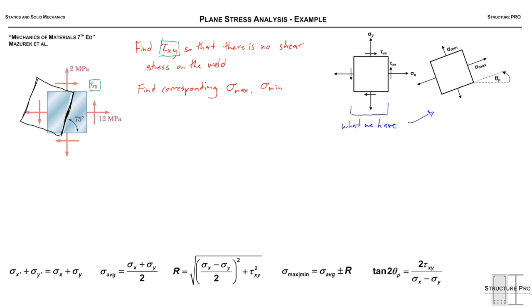We notice that if we rotate our block to be aligned with the weld, that would be equivalent to rotating negative 15 degrees according to our figure here. That is actually our principal angle because we're told we don't want any shear stress on that plane.